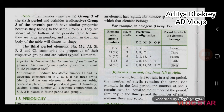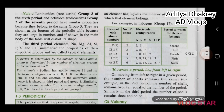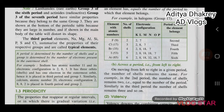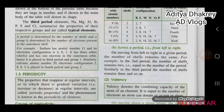Note: Lanthanides (Group 3 of the 6th period) and Actinides (Group 3 of the 7th period) have similar properties because they belong to the same group. They are shown at the bottom of the periodic table because they are large in number, and if shown in the main body of the table, they would distort its shape. The third period elements — Na, Mg, Al, Si, P, S, and Cl — summarize the properties of their respective groups and are called typical elements. A period is determined by the number of shells, and a group is determined by the number of electrons present in the outermost shell.